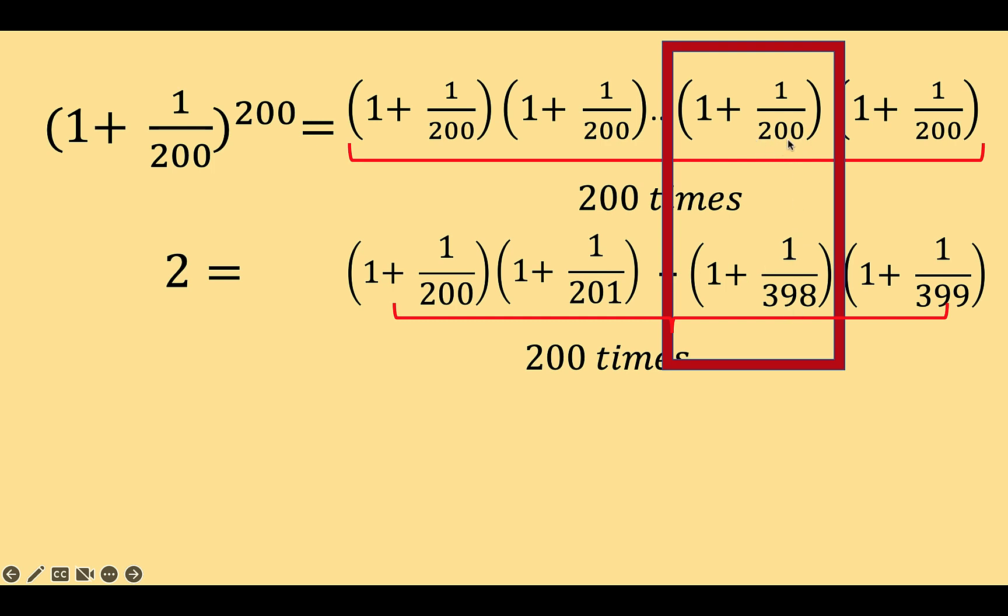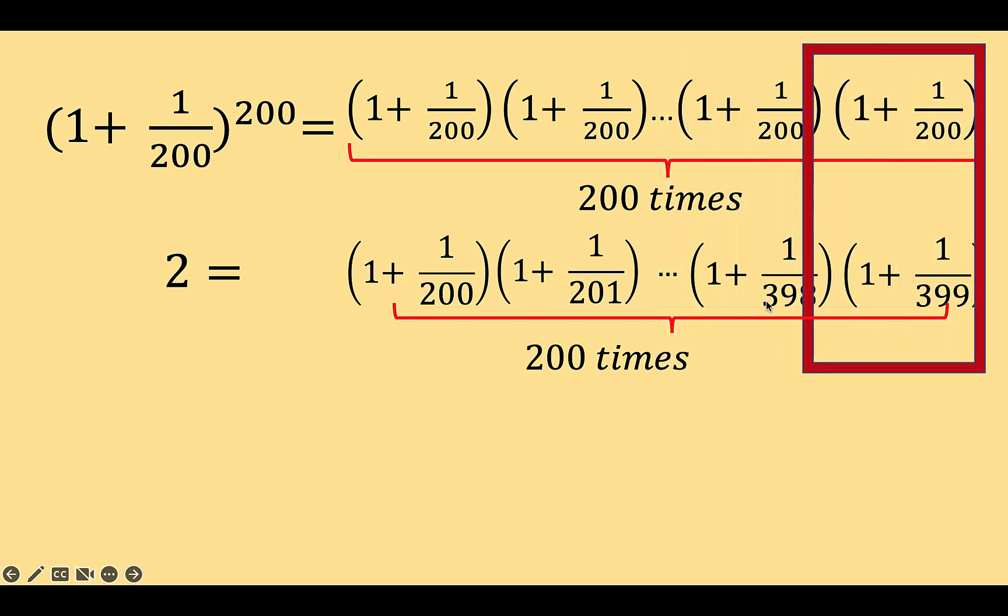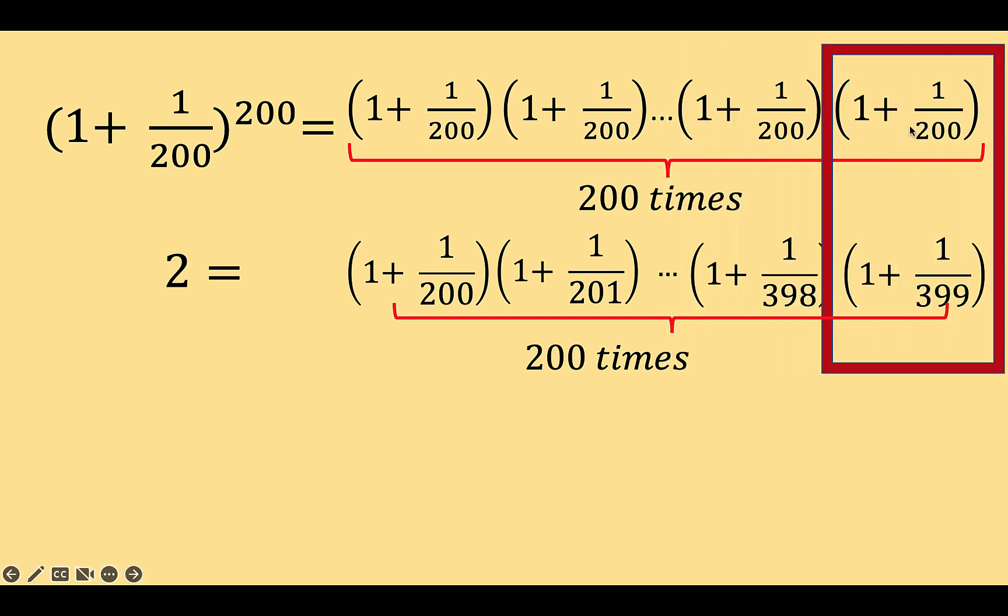So this denominator 200 is lesser than this denominator 398. So this top factor again must be greater than the factor at the bottom. And let's look at the last one. The same explanation, this fraction is greater than this fraction at the bottom.